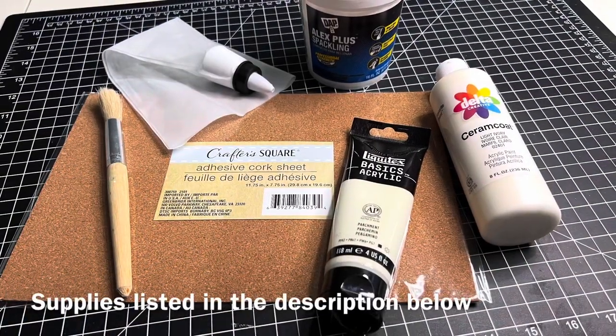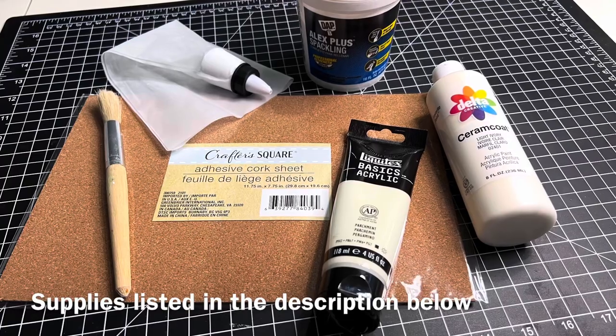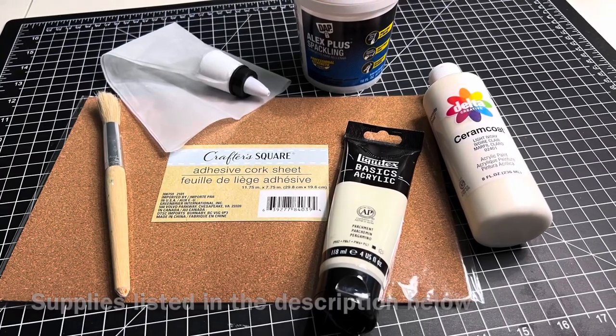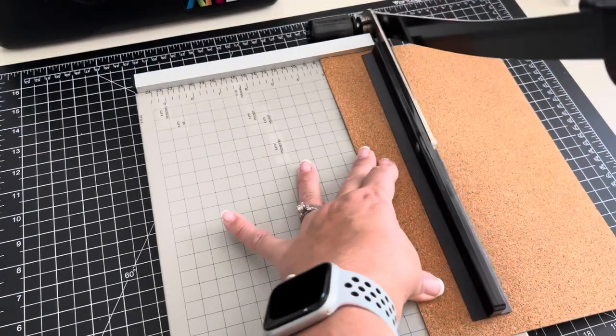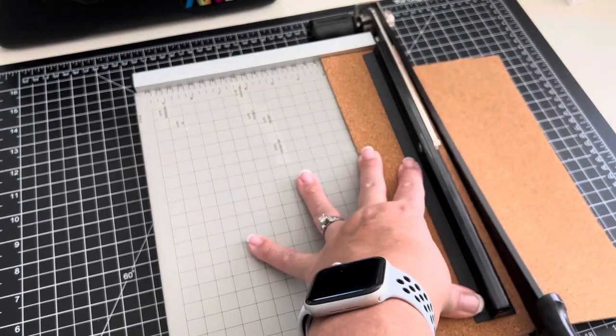Here's a quick shot of the supplies I used but I'll list them in the description below. I chose the guillotine type cutter because this is the easiest way to chop a lot of blocks.